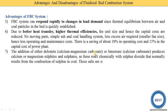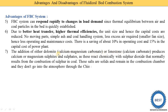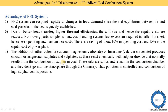The addition of inert materials — either dolomite (calcium magnesium carbonate) or limestone — causes them to react chemically with sulfur dioxide, which normally results from combustion of sulfur in coal. These reactions produce calcium or magnesium sulfate, which are solid salts that remain in the combustion chamber and do not escape to the atmosphere through the chimney. This controls SO₂ pollution and makes combustion of high-sulfur coal possible.